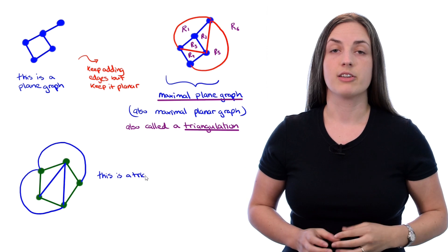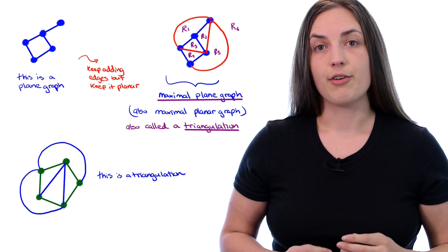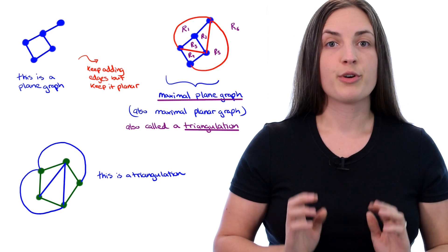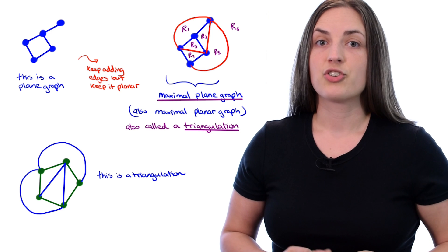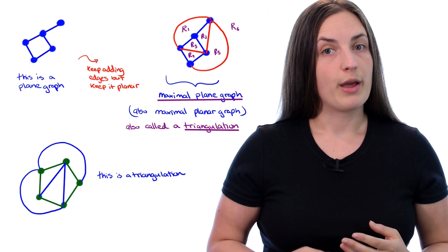We can't add any more, and we have a triangulation. Our green graph had five vertices, so I could have predicted that after making it a triangulation, we would end up with nine edges.